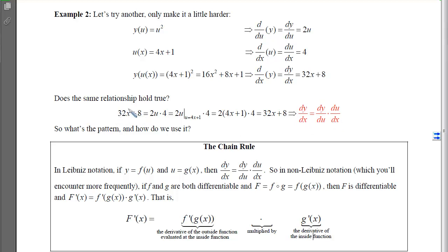Well, if we backtrack that, there's our 32x + 8. Is that the same as 2u times 4? Well, if we recall that u is 4x + 1, then 2 times that (4x + 1) times the 4 does indeed give us the 32x + 8.